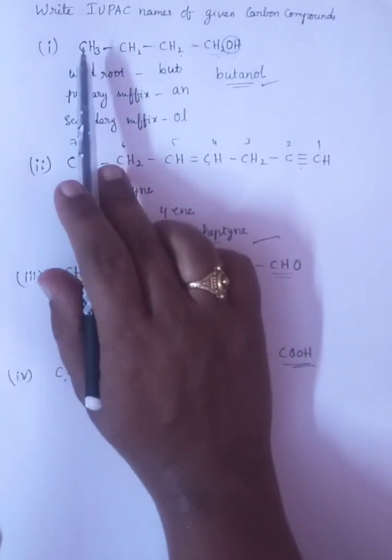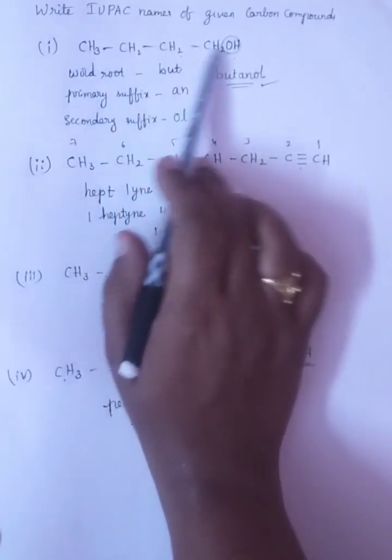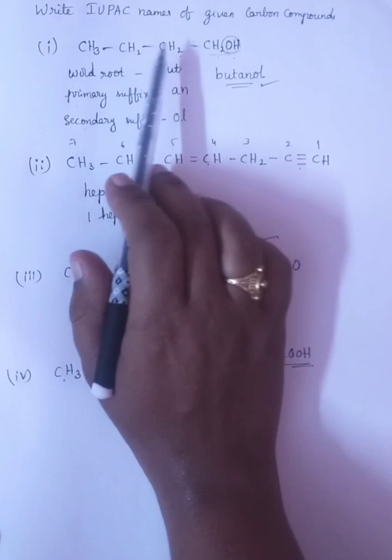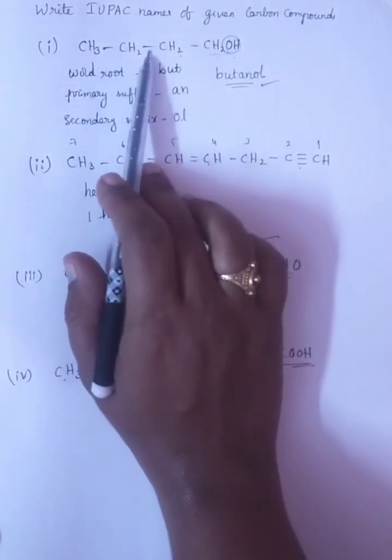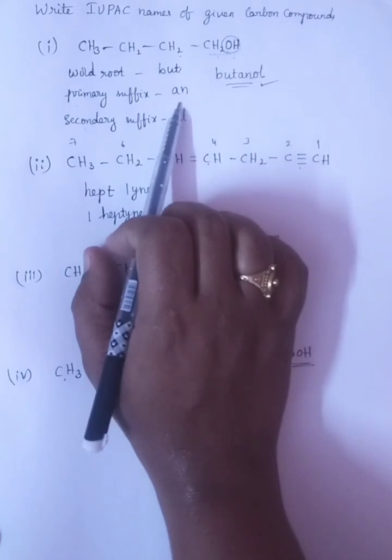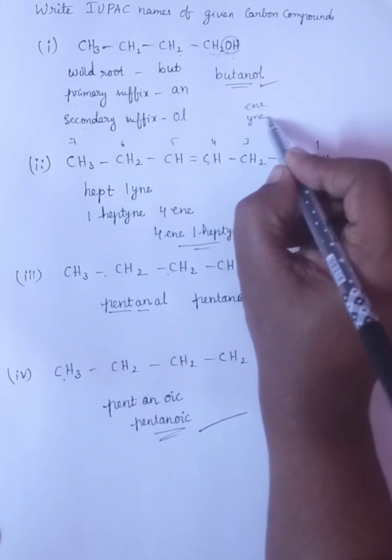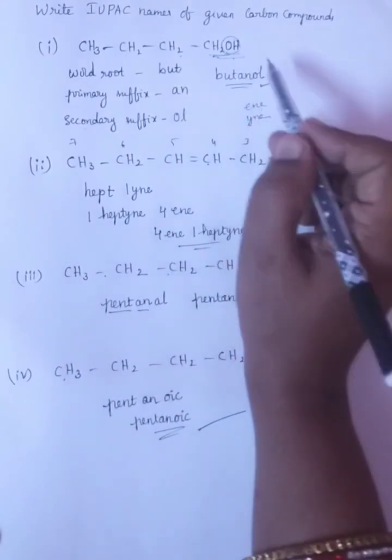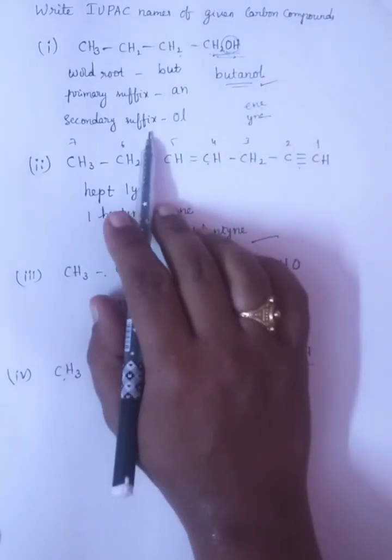See, first count the number of carbons: 1, 2, 3, 4. This is the parent chain. Four is nothing but BUT. Primary suffix is all single bonds, so that's why AN. If double bond is there, we will write IN. Secondary suffix, functional group OH - alcohols. For OH, we will write OL. So the name will be butanol.